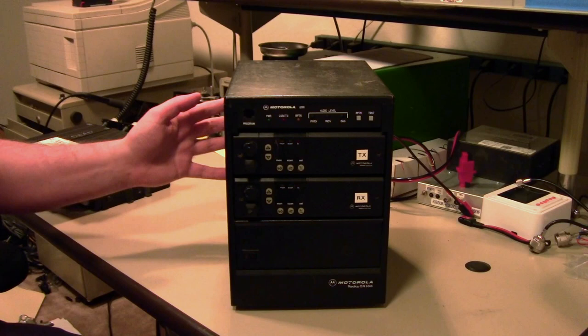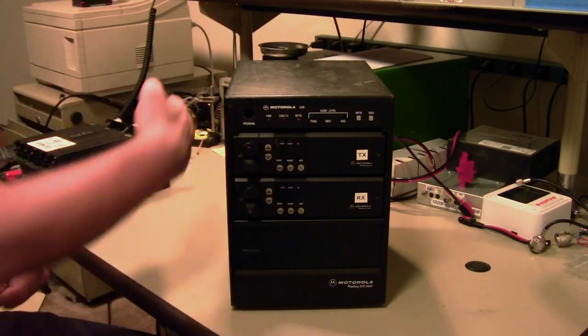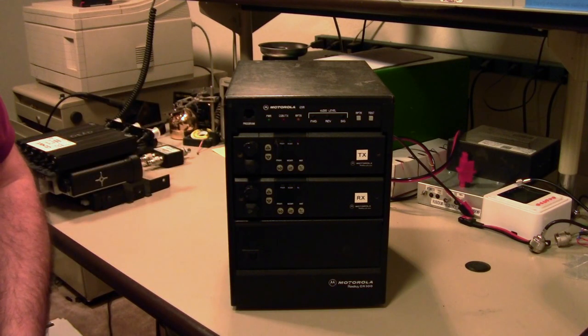these four socket head cap screws off, pull the back off, unscrew the radio, and the radio slides out the back of the repeater chassis.